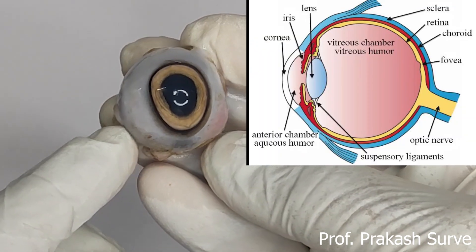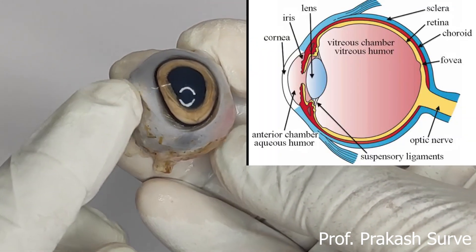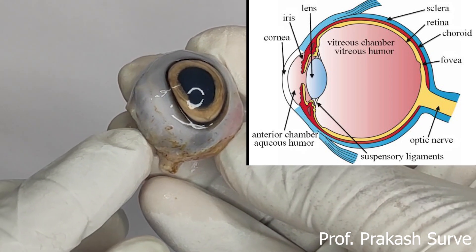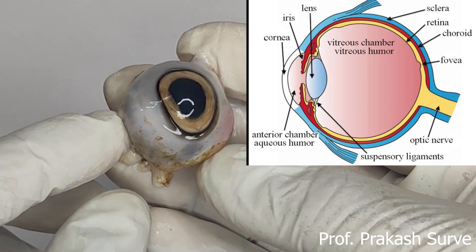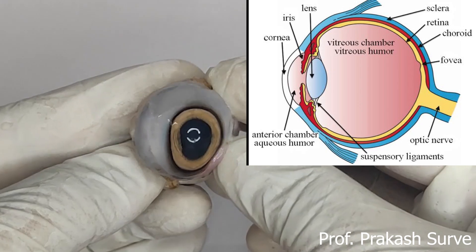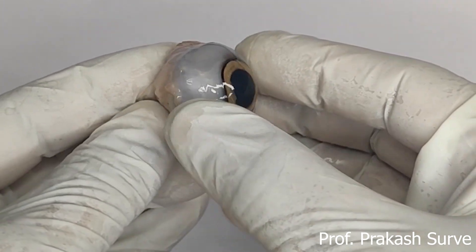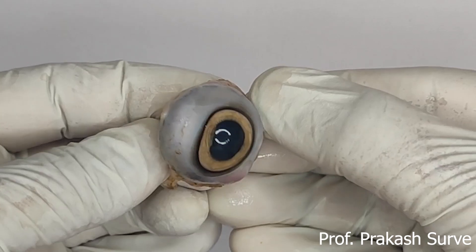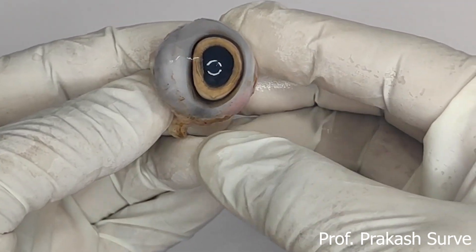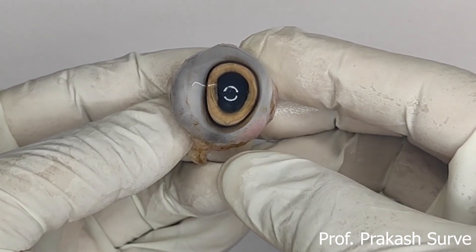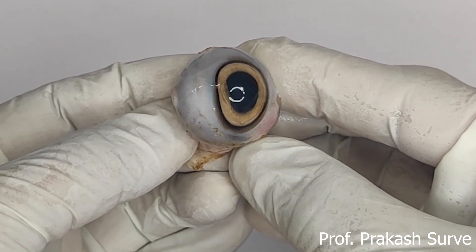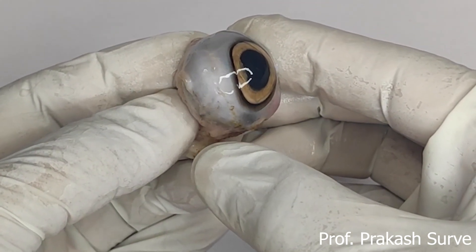The wall of the eyeball has three layers: the sclera, the choroid, and the retina. The sclera is the outermost layer — the white portion we observe on the outside. It is made up of dense fibro-elastic connective tissue, which provides attachment to the eyeball muscles.